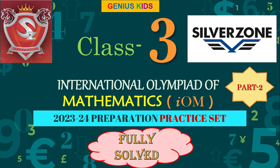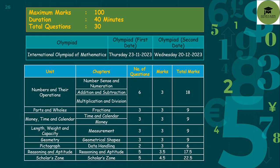Hello friends, welcome to my channel Genius Kids. Today I have a new video about the Silver Zone Class 3 International Mathematics Olympiad 2023-2024 preparation practice set part 2. In the previous video I already shared part 1. In part 2 I will share the remaining 10 questions. The total maximum marks is 100, duration 40 minutes, and total number of questions is 30. The first Olympiad date is 23rd November and 28th December 2023.